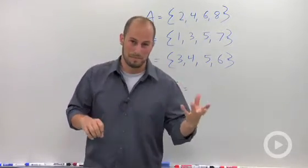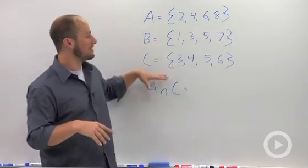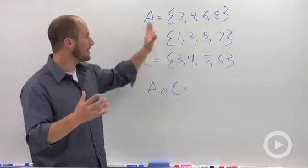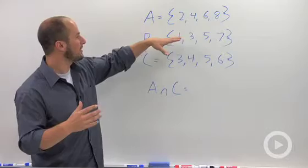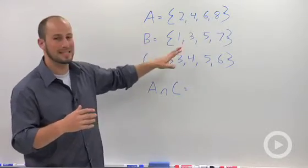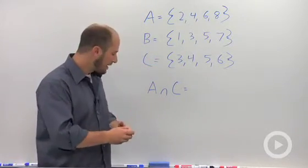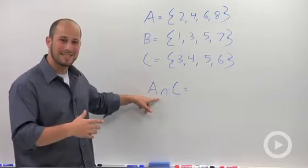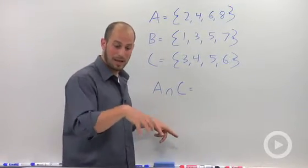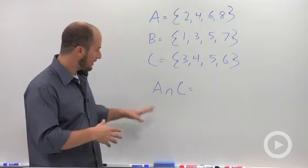So let's look here. We have a bunch of sets, each with four different numbers. A is a couple even numbers, B is a couple odd, and C is just some numbers in the middle. Intersection is always designated by this upside-down U. So what we're looking for in this example is the intersection of A and C—numbers that are in both A and C.